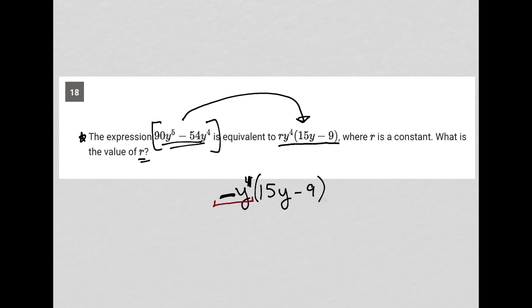blank y to the 4th power times 15y equaled 90y to the 5th power. So the y to the 5th power is already taken care of because I have a y to the 4th and a y to the 1st.